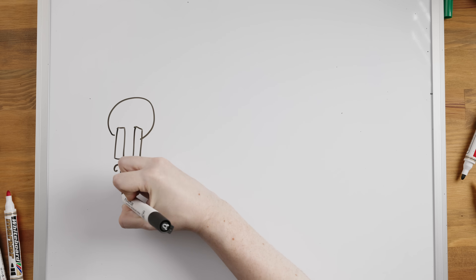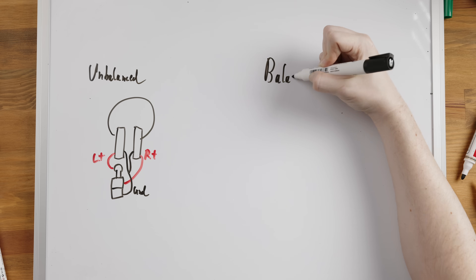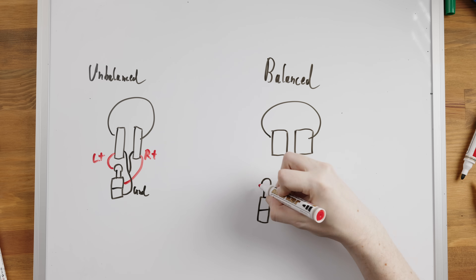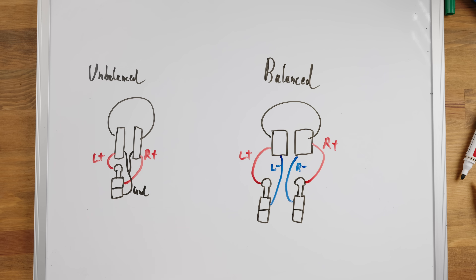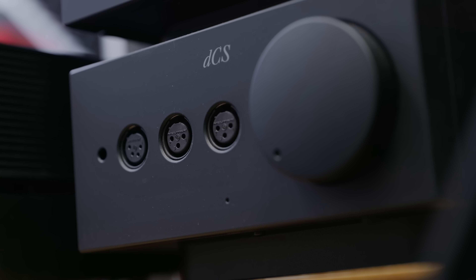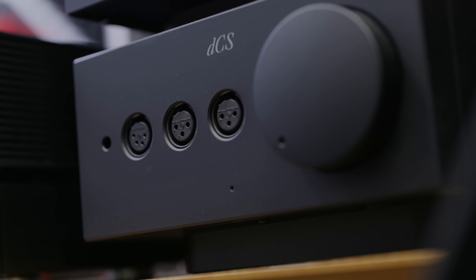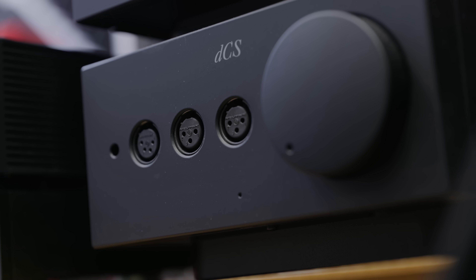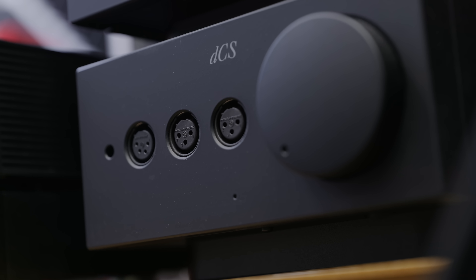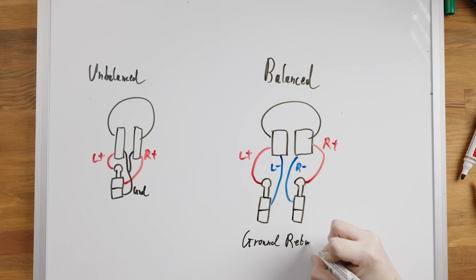Same goes for headphones: a 3.5mm connector is single-ended if it's being used for two channels since it only has three contacts, but can facilitate differential if it's only being used for one channel. This is also why on some headphone amps you'll see the option for a 2-channel 4-pin XLR balanced output — providing positive and negative for each of the two channels — but sometimes a dual 3-pin XLR, where each connector provides the positive and negative outputs for one channel only. The ground pin isn't actually connected since headphones aren't grounded at all.